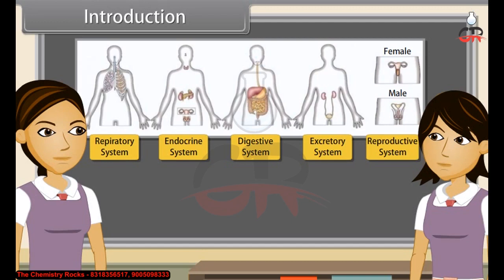We can say that each system is specialized to do a specific function, such as nutrition, digestion, respiration, transport of materials, and excretion respectively. In each system, all the organs work together so that the whole system can work properly. In other words, all the organs of a system coordinate with each other so that the system can work properly.